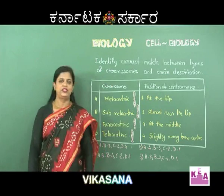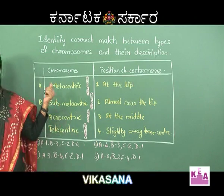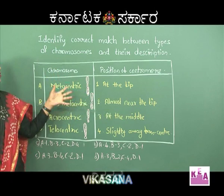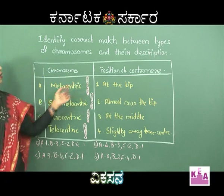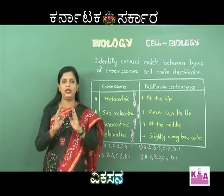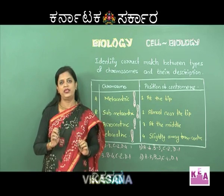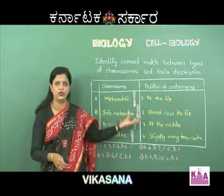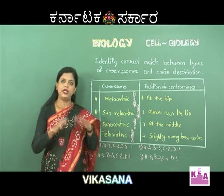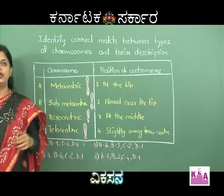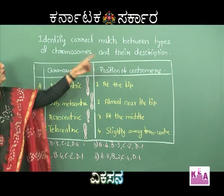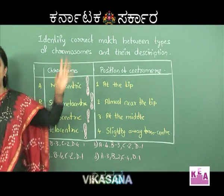Moving on to the next question about the types of chromosomes. Two columns are given and you are asked to identify or match the right ones. Identify the correct match between the type of chromosomes and their description - there is a description in one column and a type in another.